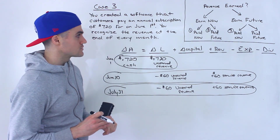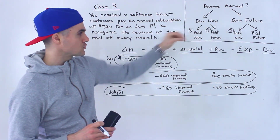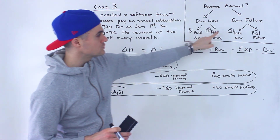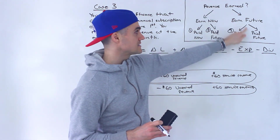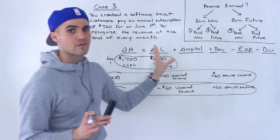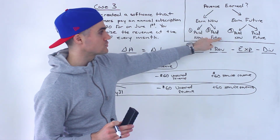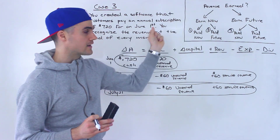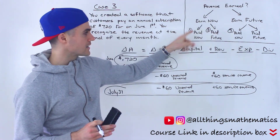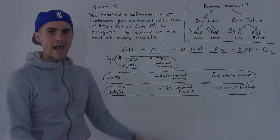So there are different kinds of scenarios you'll run into. When you read a transaction, read it carefully and determine which of the three cases it falls into. They may even describe a scenario where you earn in the future and get paid in the future — but that's just an event with no transaction. Transactions only happen in cases one, two, and three. Keep those flow charts in mind, figure out which case it is, and apply the patterns we went through for each case.